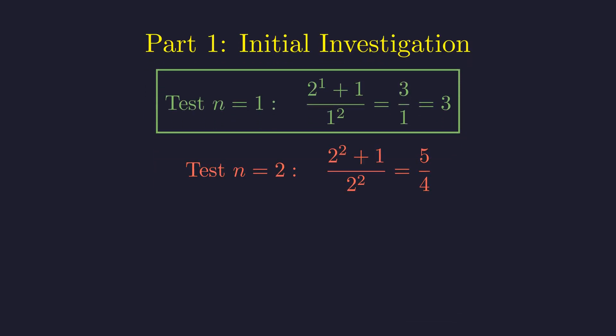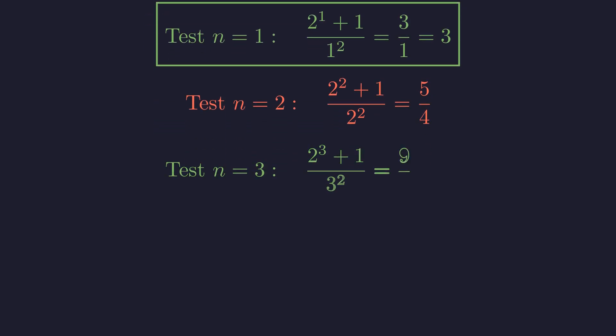For n equals 2, we have 5 fourths, not an integer. Now for n equals 3, 2 cubed plus 1 is 9, and 3 squared is 9. The result is 1. We've found a second solution.